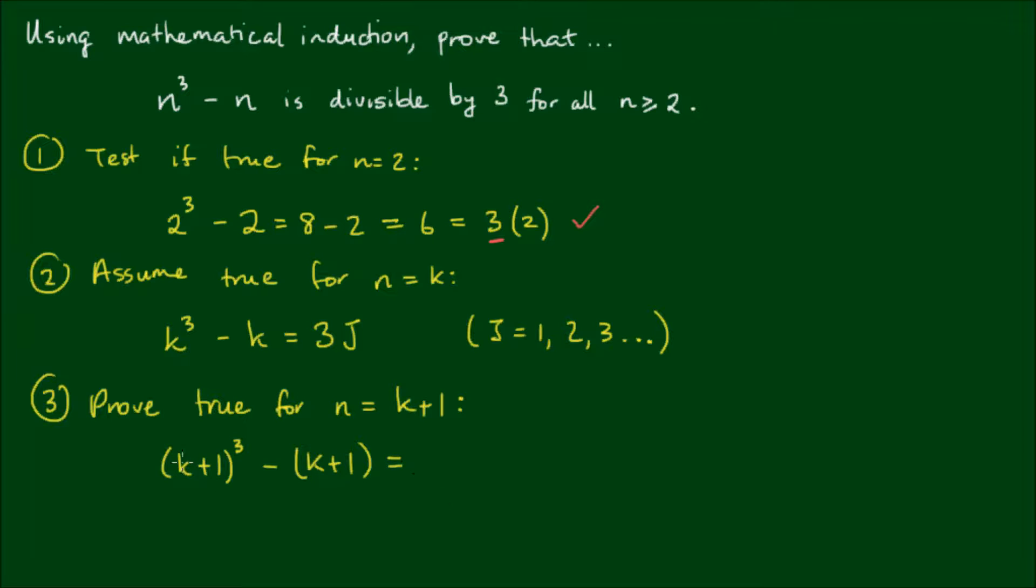Now we have to perform a binomial expansion here, so the first parenthesis expands to k cubed plus 3k squared plus 3k plus 1, and then minus k plus 1. The negative can expand into the brackets to become minus k minus 1, and I can delete the parenthesis here.